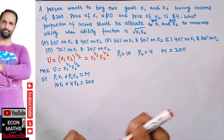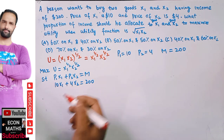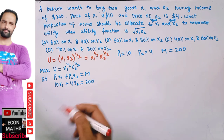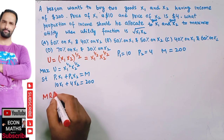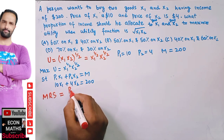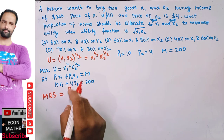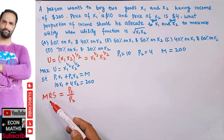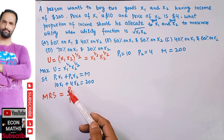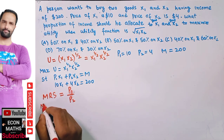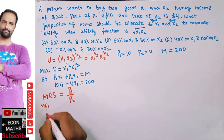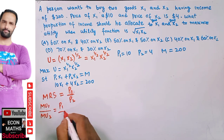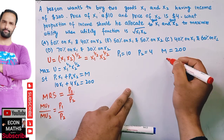To solve this utility maximization problem, we use the tangency condition. For the optimal point, the marginal rate of substitution between two goods should equal the ratio of their prices — that is, P1/P2. Equivalently, the marginal utility of good 1 divided by the marginal utility of good 2 should equal the price ratio.